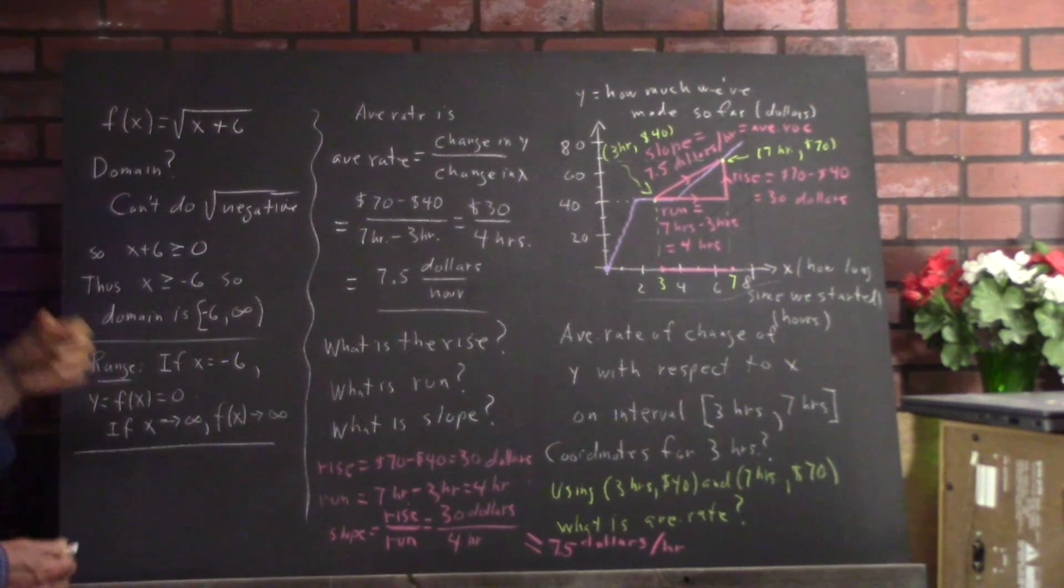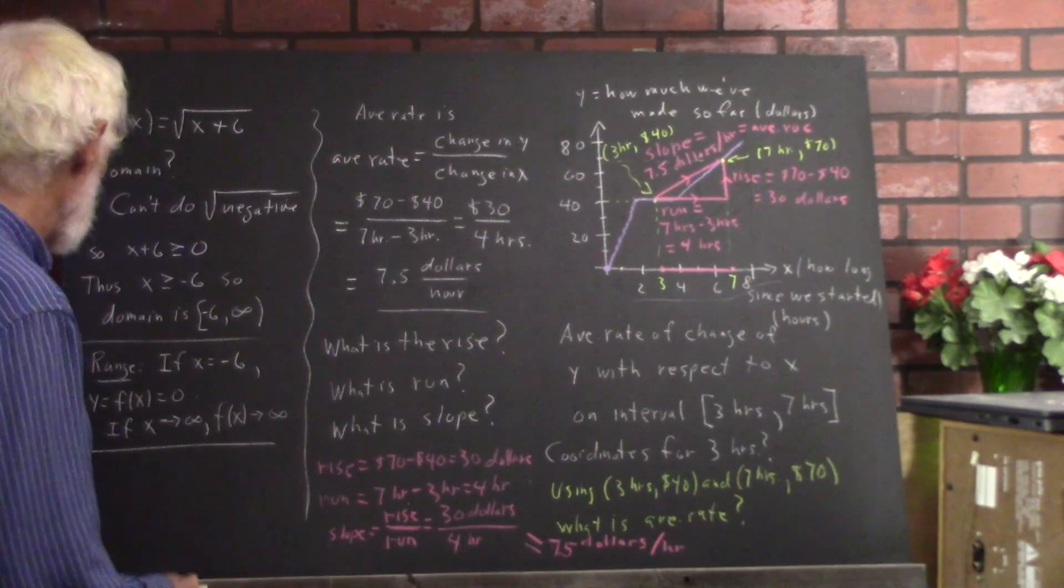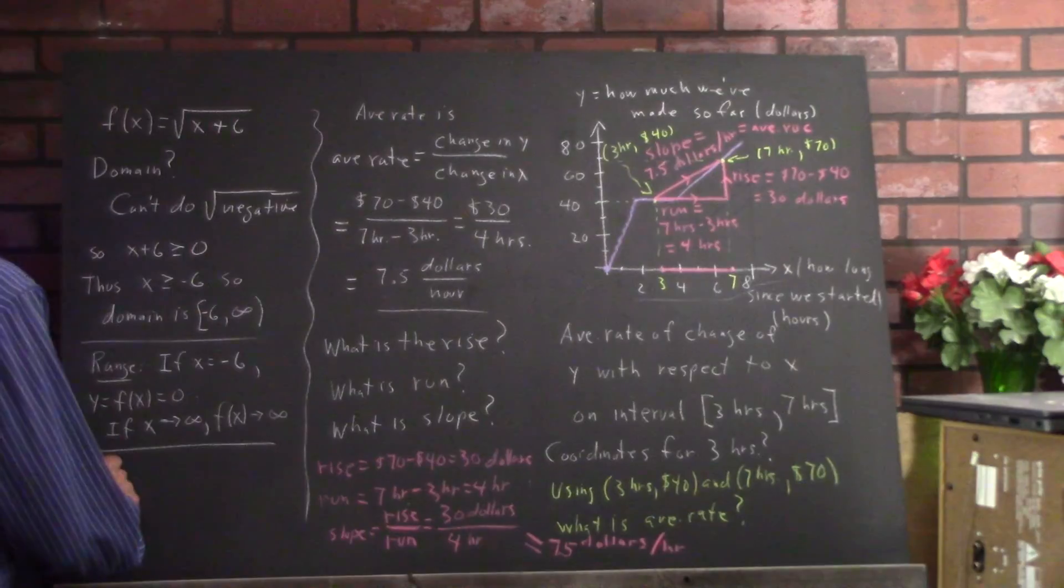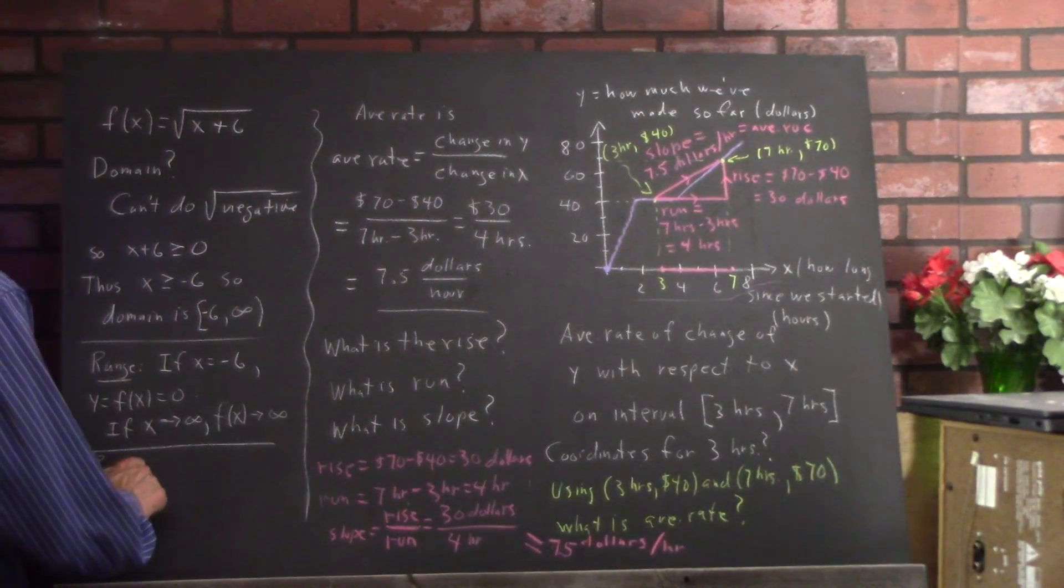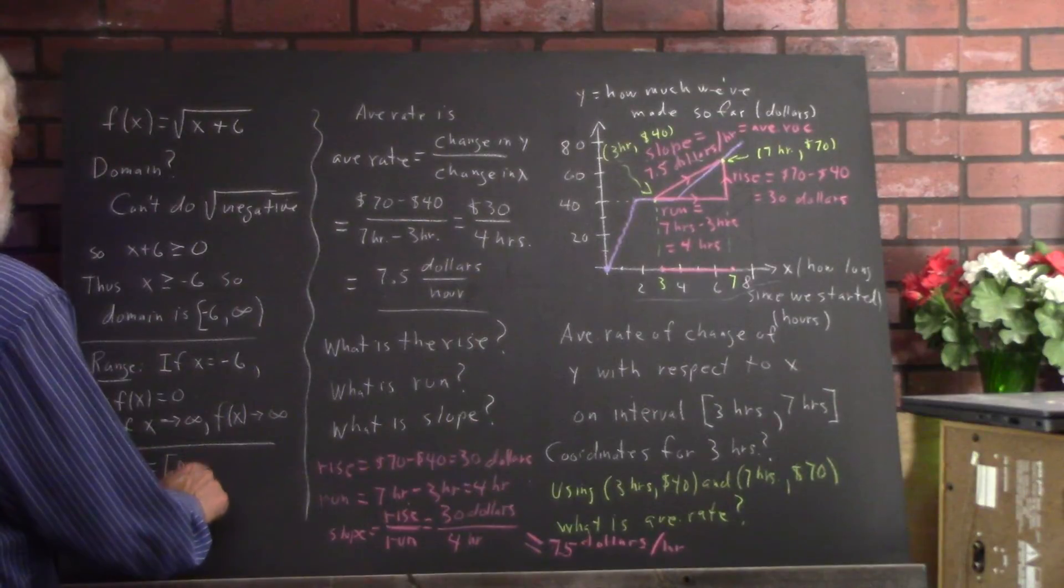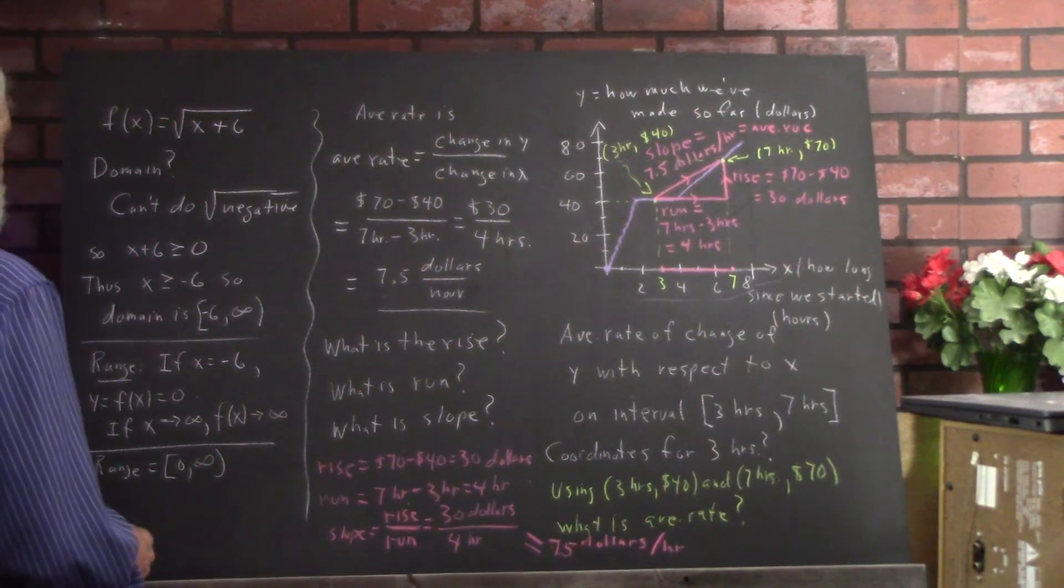So we have a continuous set of numbers starting at 0 that approach infinity. So the range would be the interval 0 to infinity. And I neglected to write that down.